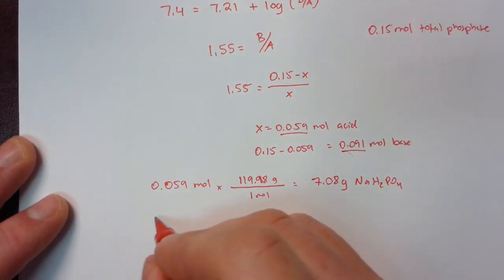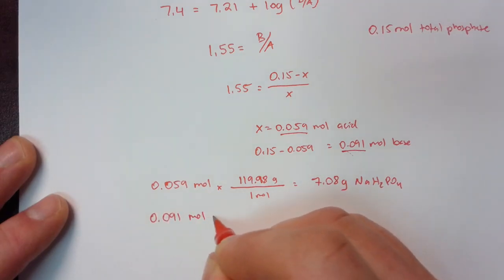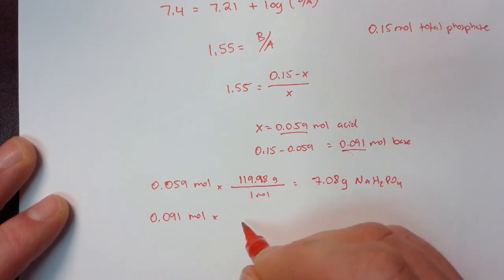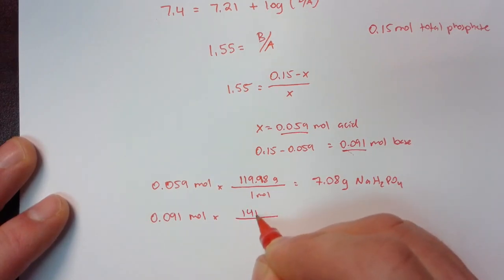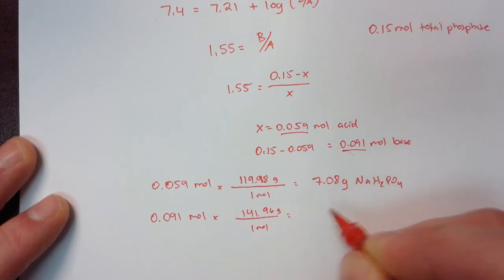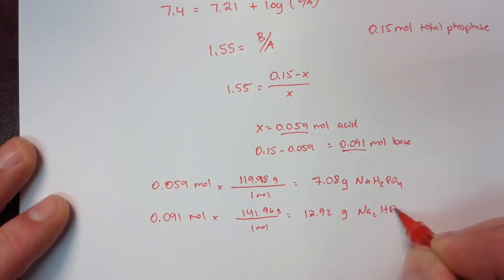And then I'm going to do the same type of calculation for the base. Molar mass here is 141.96. And I get a total 12.92 grams of the dibasic phosphate.